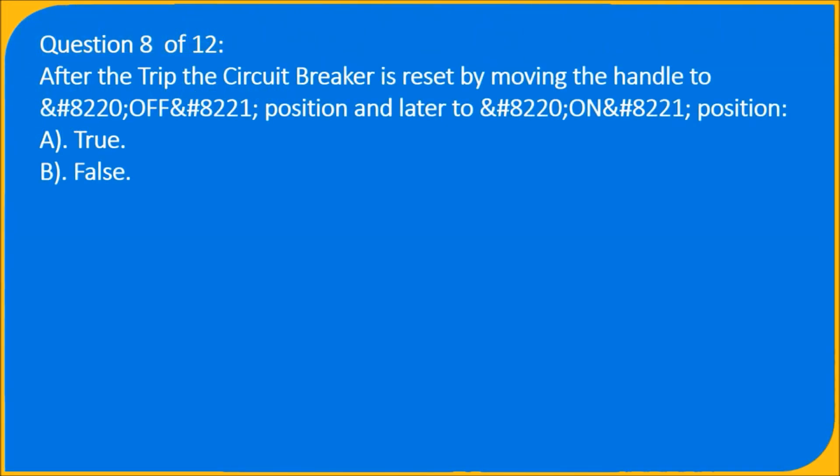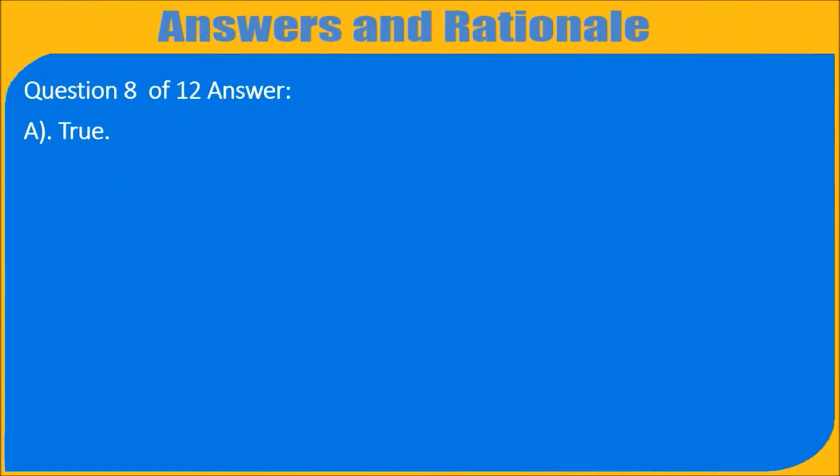Question 8 of 12: After the trip, the circuit breaker is reset by moving the handle to OFF position and later to ON position. A) True, B) False. Question 8 of 12 answer: A) True.